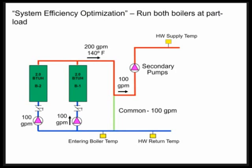My supply water temp is 140. My return flow rate and temperature is 100 GPM and 100 degrees. Again, I've got 2 million BTUs worth of load. What happens down here at the entering boiler temp? Because I have 100 GPM of 140 degree water coming down my common pipe, mixing with 100 GPM of 100 degree water, my entering boiler temperature has gone up to 120 degrees.